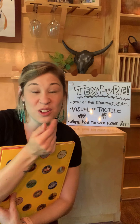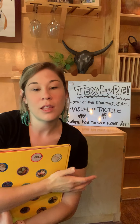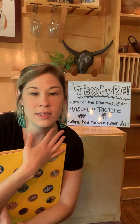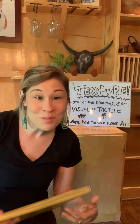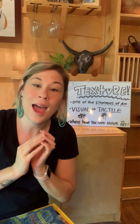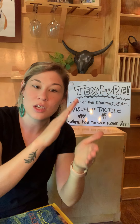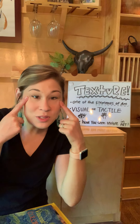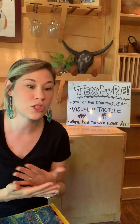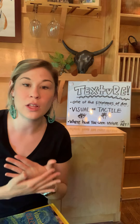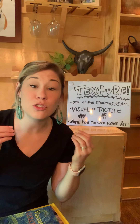There are two types of texture that we talk about in art: visual texture and tactile texture. Sometimes these are called different things — visual texture is sometimes called implied texture, and tactile texture is sometimes called real texture — but they all mean the same things. Visual texture is texture you can see, and tactile texture is texture you can touch and feel.